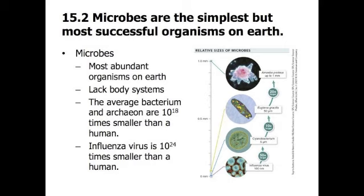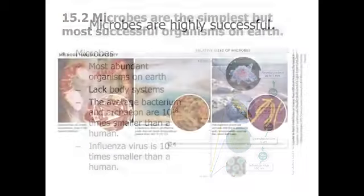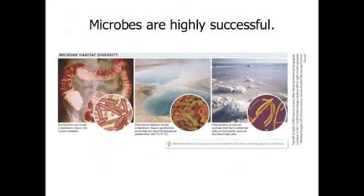Most microbes are even smaller than an amoeba. A typical bacterium or archaeon is about 1,000 million billion times smaller than a human, and an influenza virus is about 1,000 billion trillion times — that's 10 to the 24th — smaller than a human. Even though they may be invisible to the human eye, microbes are highly successful organisms. Microbes are genetically diverse: more than 500,000 kinds have been identified by their unique nucleotide sequences, and scientists expect that further studies will distinguish millions of additional microbial species.